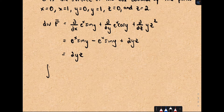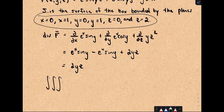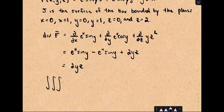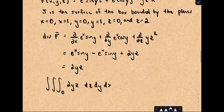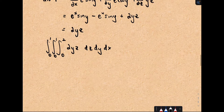Now we have to set up our triple integral, and this is something to keep in mind — you may use Cartesian, cylindrical, or spherical coordinates to describe the region. Probably the tricky part is just describing that region correctly. We're integrating 2yz, with z bounded from 0 to 2, y from 0 to 1, and x from 0 to 1. So it makes sense in this case just to stick with Cartesian coordinates.